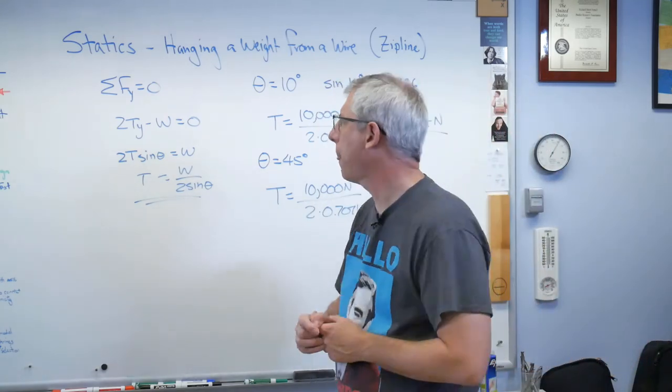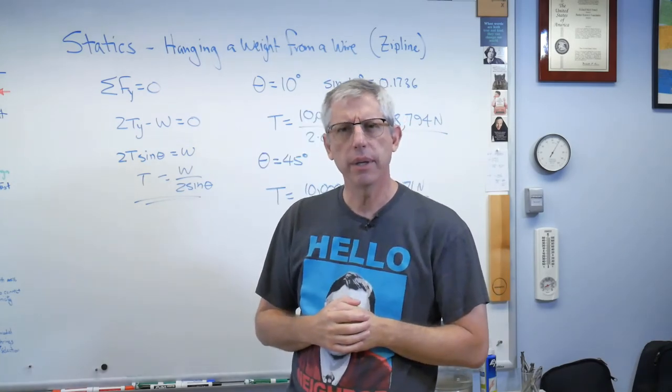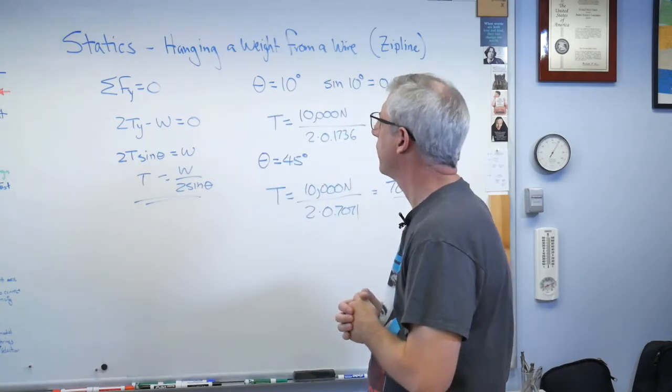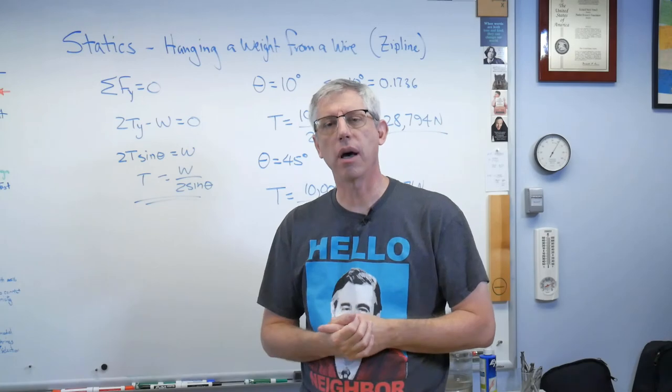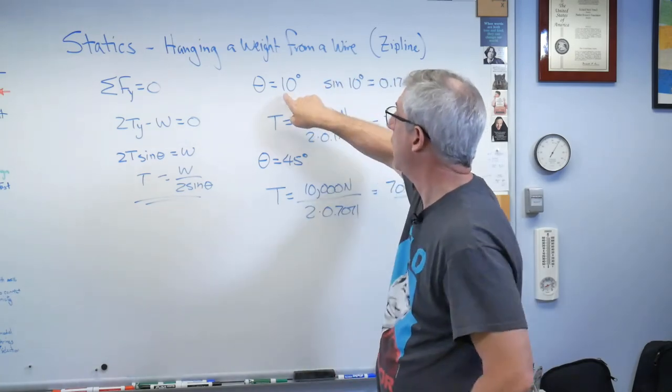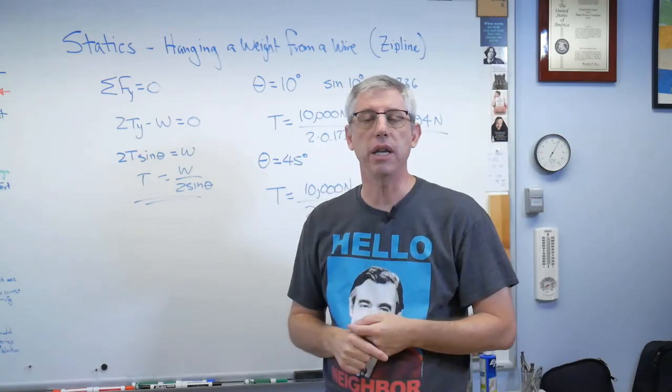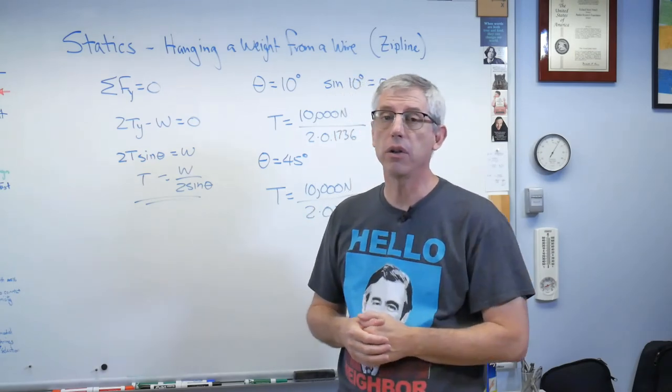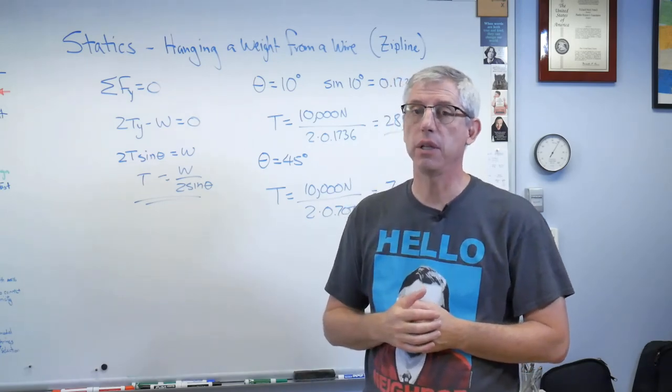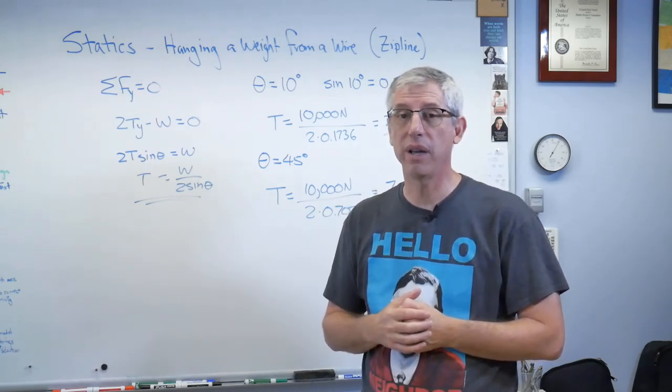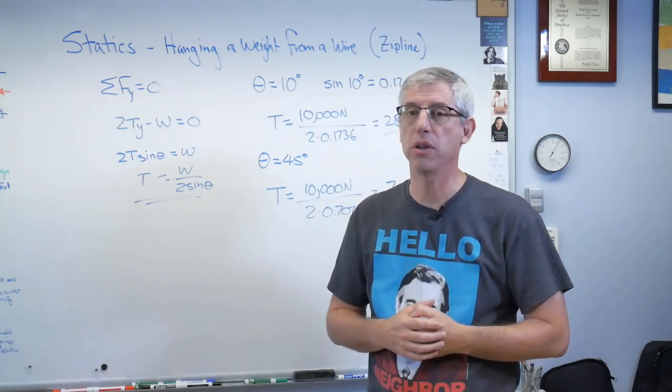One last thing before we stop. What if I wanted that wire to be horizontal, perfectly horizontal? Is that possible? Well, if the wire is perfectly horizontal, there's no vertical component, right? What happens to sine as theta gets small? As theta gets small, sine goes to zero. So if you want a really low angle in there, you're going to need an enormous tension in that wire. If you wanted to hold a 10,000-pound weight at some small angle, like a degree or two, don't be surprised if the tension in the wire is 2, 5, 10 times the weight you're trying to lift. So horizontal wires are not a very good way to try to lift weights.